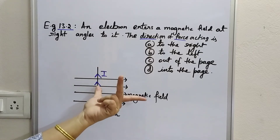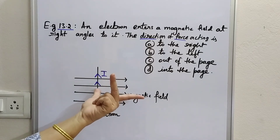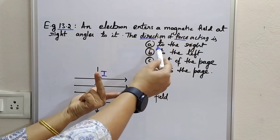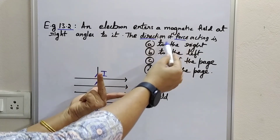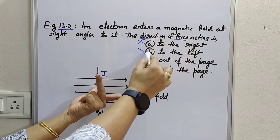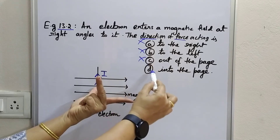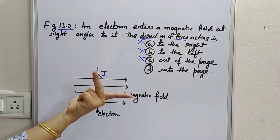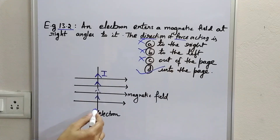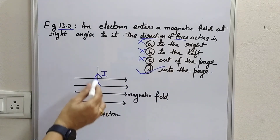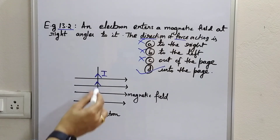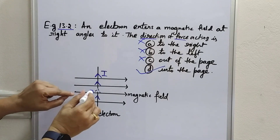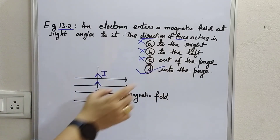As I put my left hand's three fingers at right angles to each other as per Fleming's Left Hand Rule, the thumb goes into the plane of the paper. So out of the options — to the right? No. To the left? No. Out of the page? No. Into the page? Yes. According to Fleming's Left Hand Rule, the force is into the page, meaning the electron will go into the plane of the board or the page.